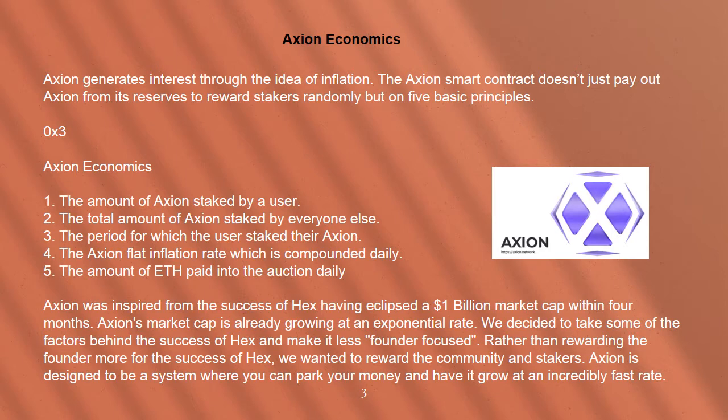The 5 principles are: 1. The amount of Axion staked by a user. 2. The total amount of Axion staked by everyone else. 3. The period for which the user staked their Axion. 4. The Axion flat inflation rate, which is compounded daily. 5. The amount of ETH paid into the auction daily.